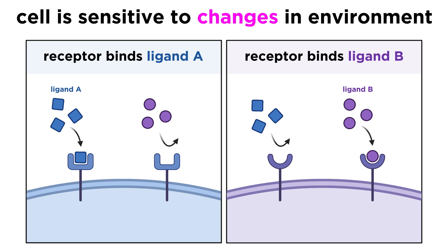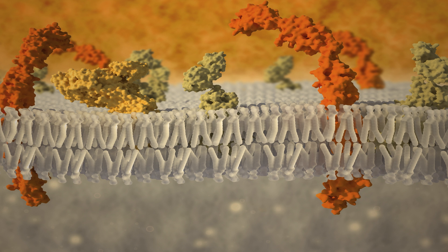This specificity allows the cell to have increased sensitivity in responding to changes in the molecular environment, and allows it to be able to distinguish relatively subtle differences between similar types of molecules.